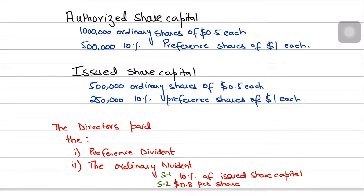Authorized share capital is not reported in the statement of changes in equity either, although it is disclosed as a note in the financial statements. We are more concerned with the issued share capital. In this question, we have 500,000 ordinary shares of $0.50 each and 250,000 10% preference shares of $1 each.